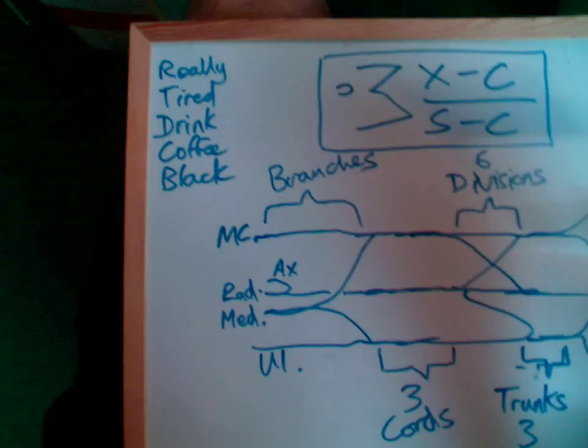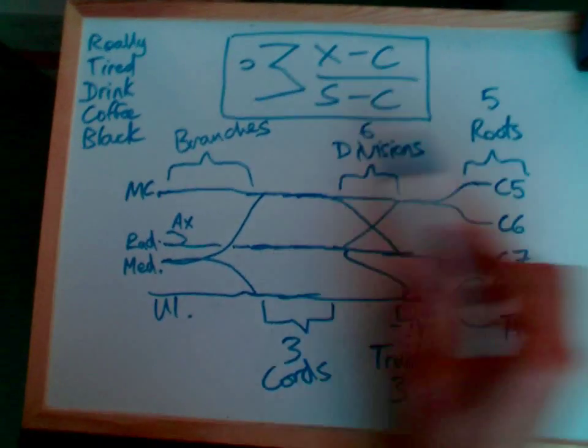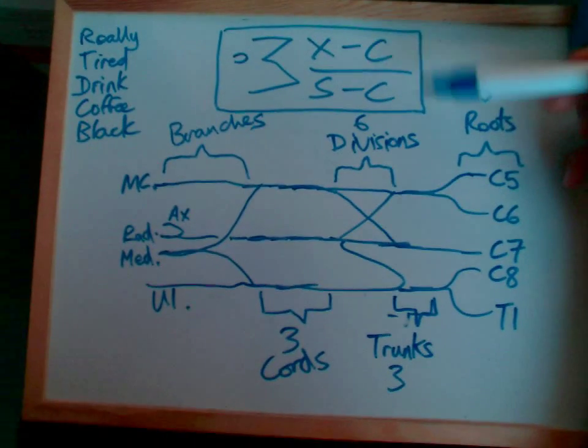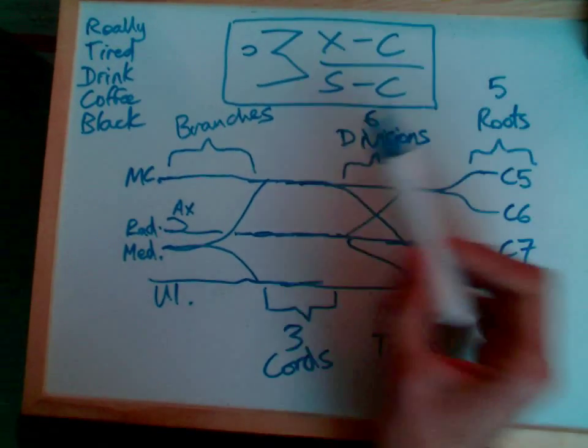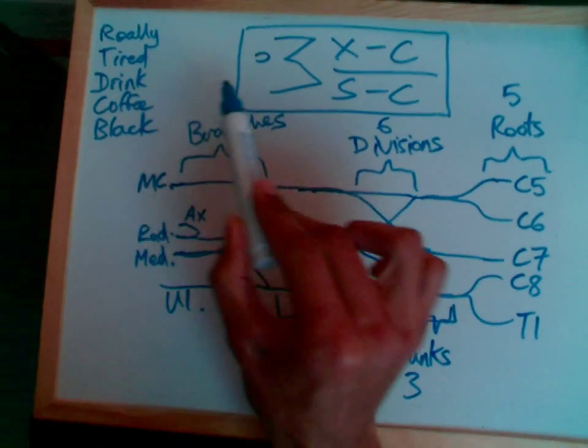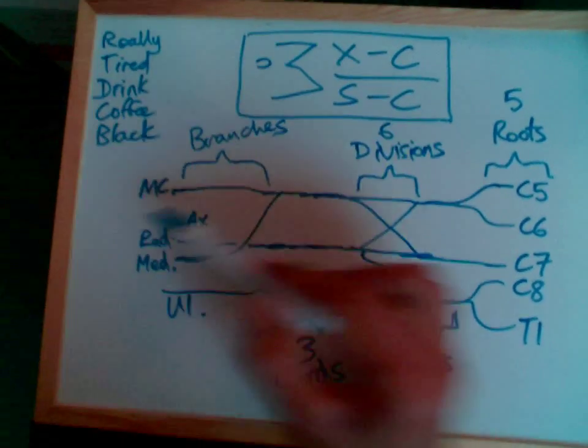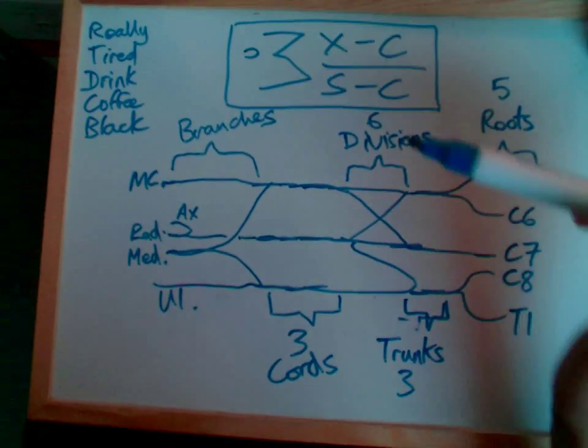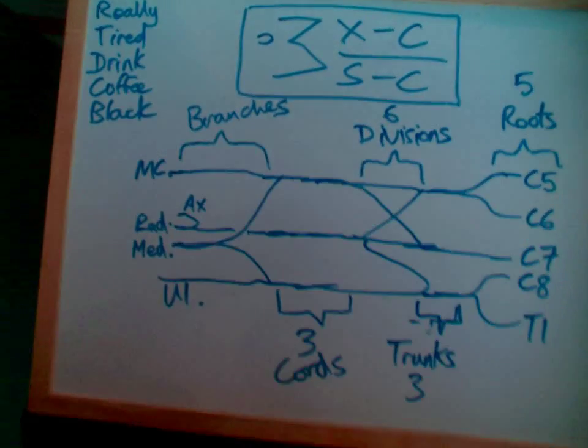So there we have it, the brachial plexus, the brachial equation, an easy trick to try to remember how that structure works. And a mnemonic to remember the order of naming in the brachial plexus.